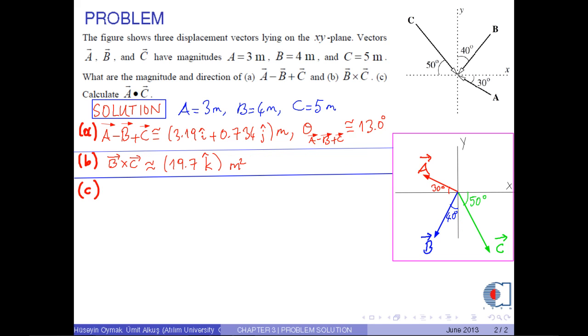In part c, first we find the angle between the vectors A and C. From the figure, it is found as 160 degrees.